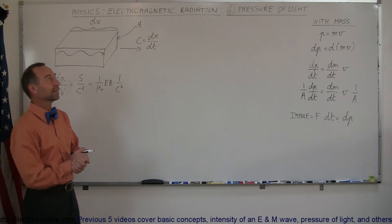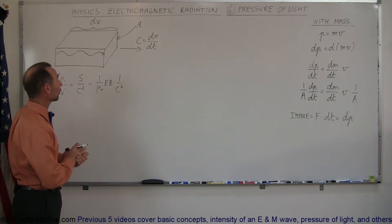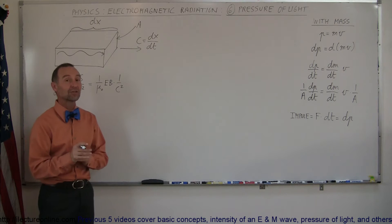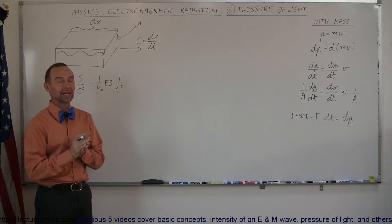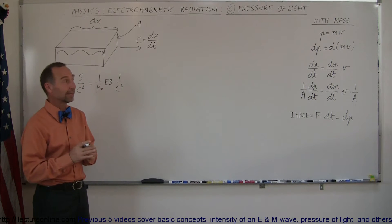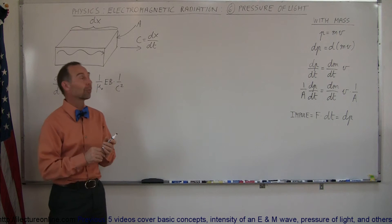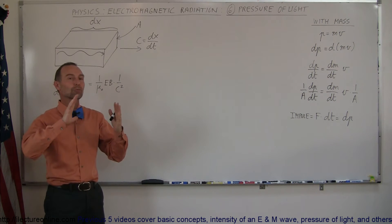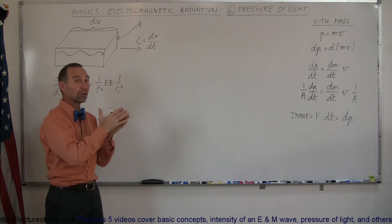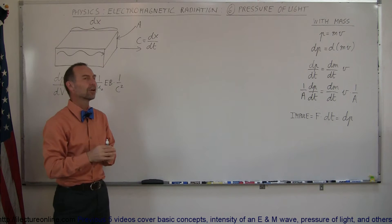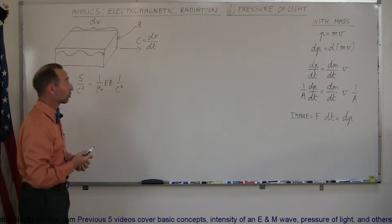Welcome to ElectronLine. This is the last segment of our introduction to electromagnetic radiation. This time we're going to talk about the pressure of light. It turns out that electromagnetic radiation, which light is part of, can actually induce pressure whenever it lands on a surface. We're going to figure that out and mathematically see how that works.